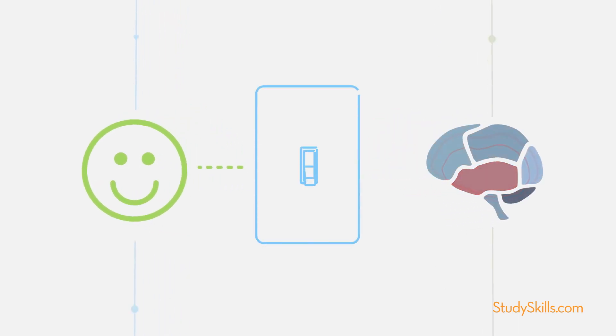Emotions are the on-off switch to learning. If emotions are down, your brain literally runs out of power for learning.